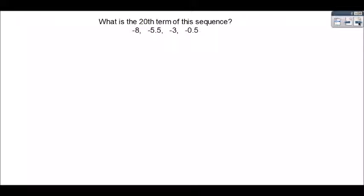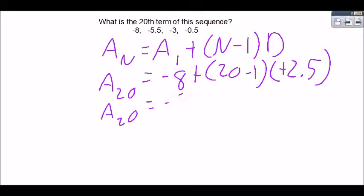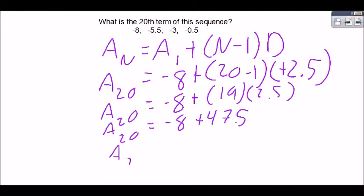Alright, what's the 20th term in this sequence? I'm going to write my explicit form equation and then I'm just going to plug in my values and solve. So the 20th term in this sequence is 39.5. My first term was negative 8. They wanted us to find the 20th term, so I replaced with 20. And then my common difference was they were adding 2.5 each time.